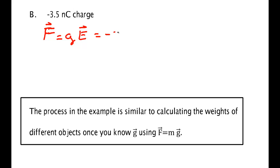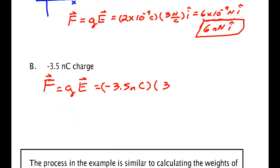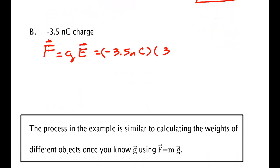Alright, so again we just apply the definition. This time we have minus 3.5 nanocoulombs, and we're multiplying that by 3 newtons per coulomb i-hat. 3 times 3.5, that would be 10.5 nano newtons in the i-hat. I'm missing my minus sign.